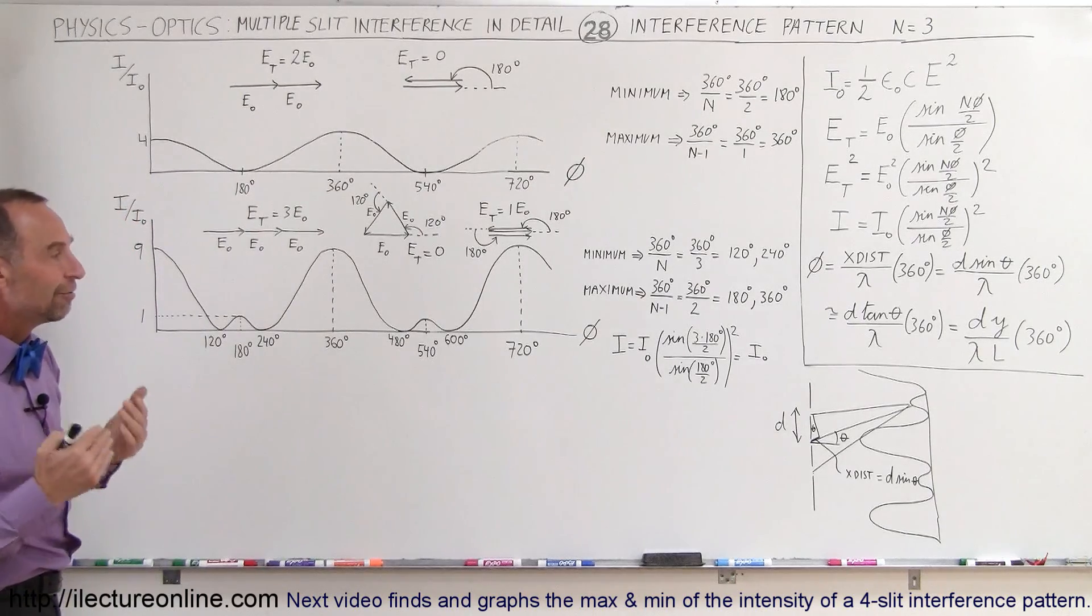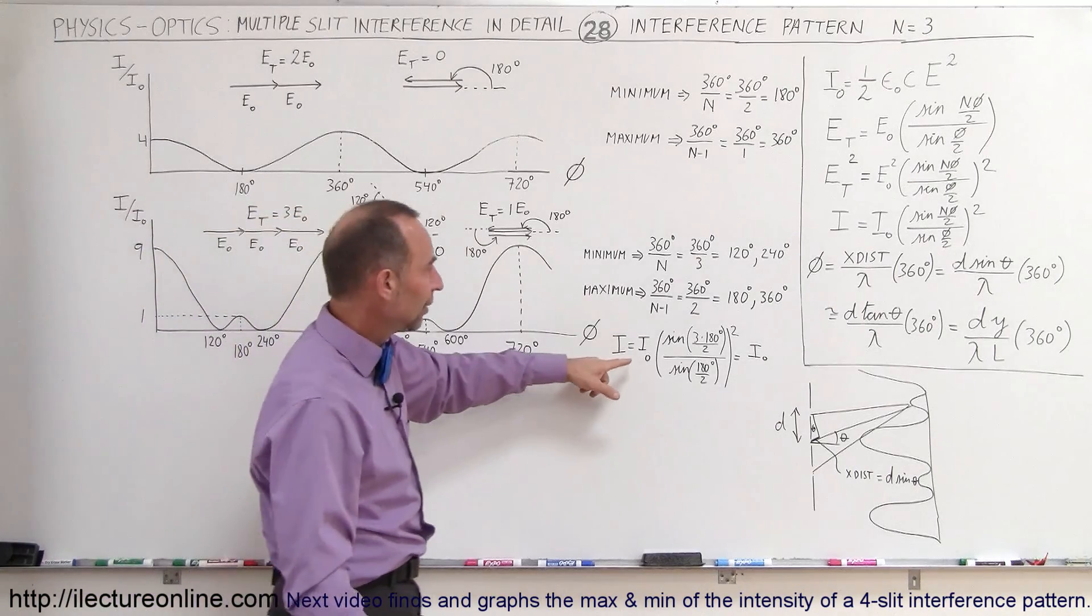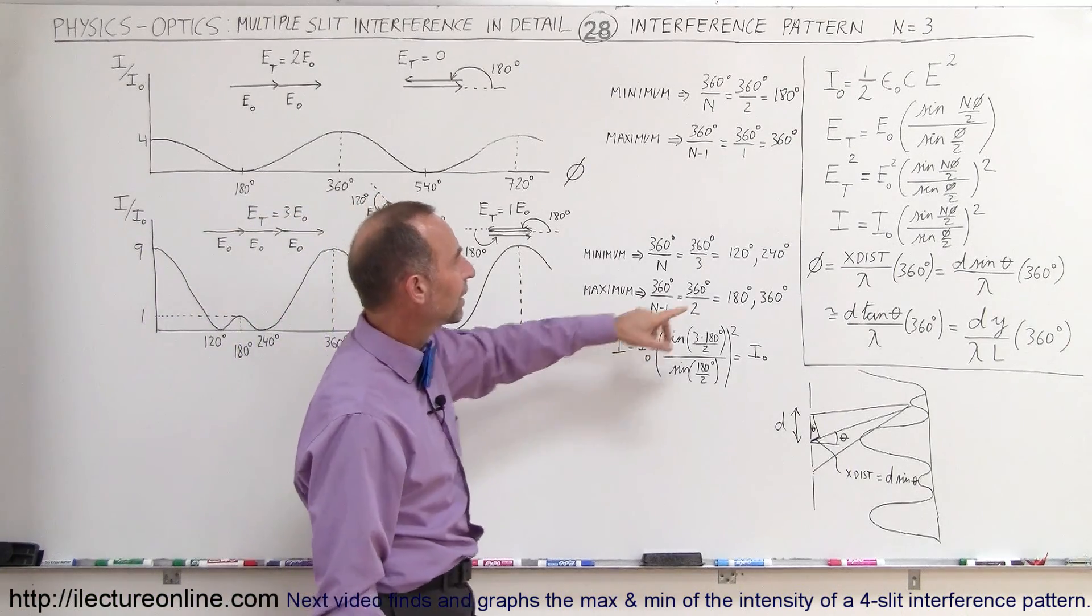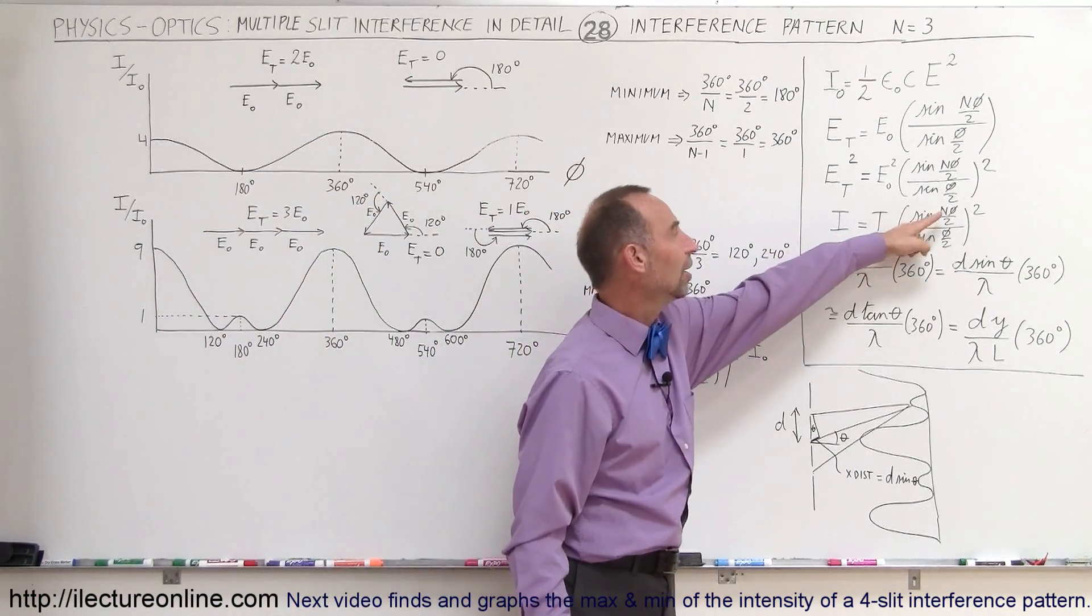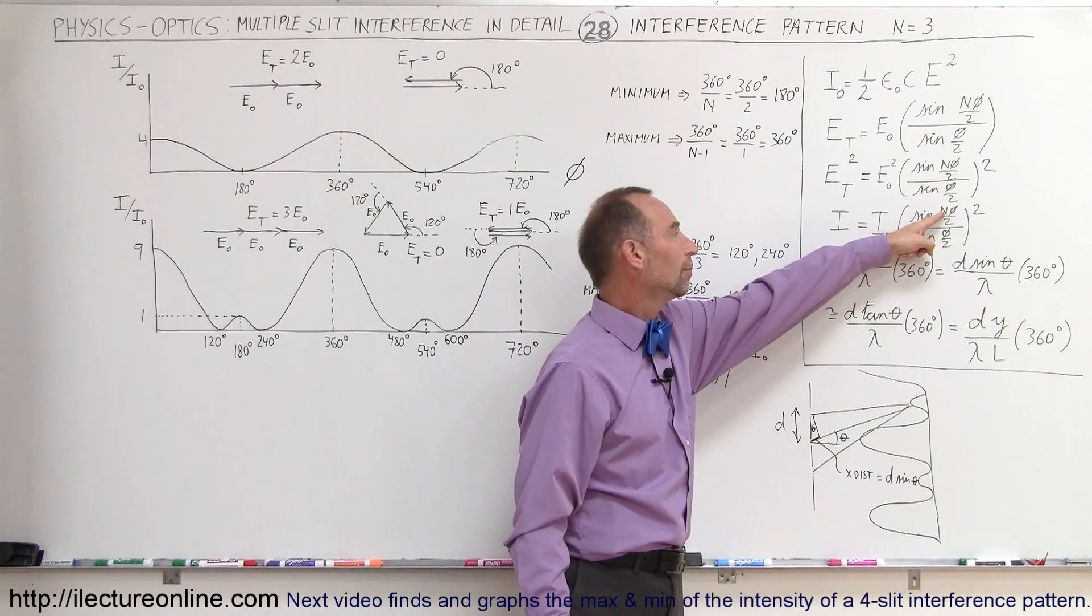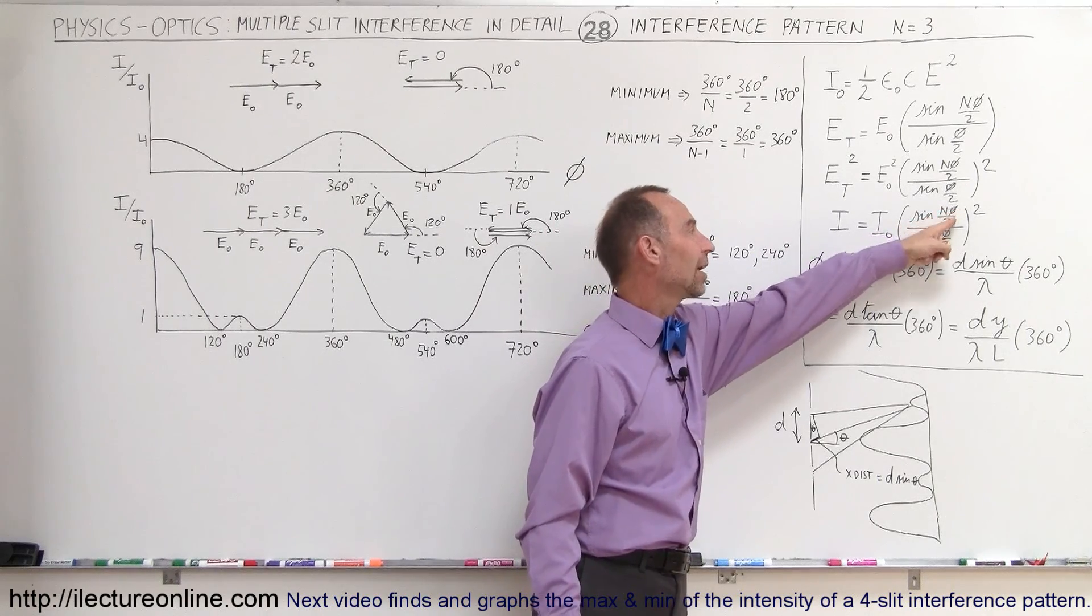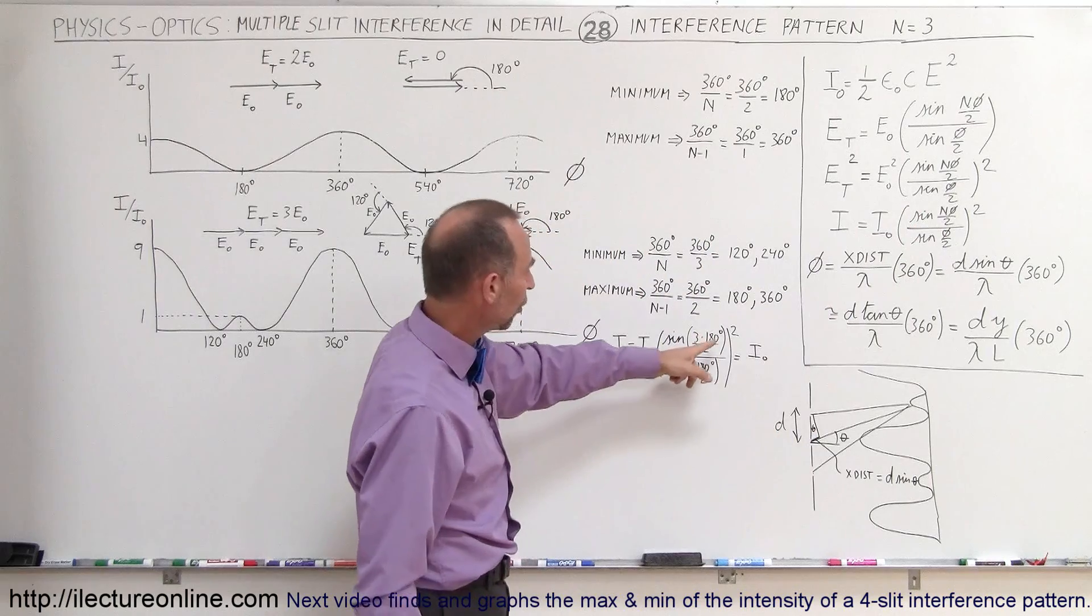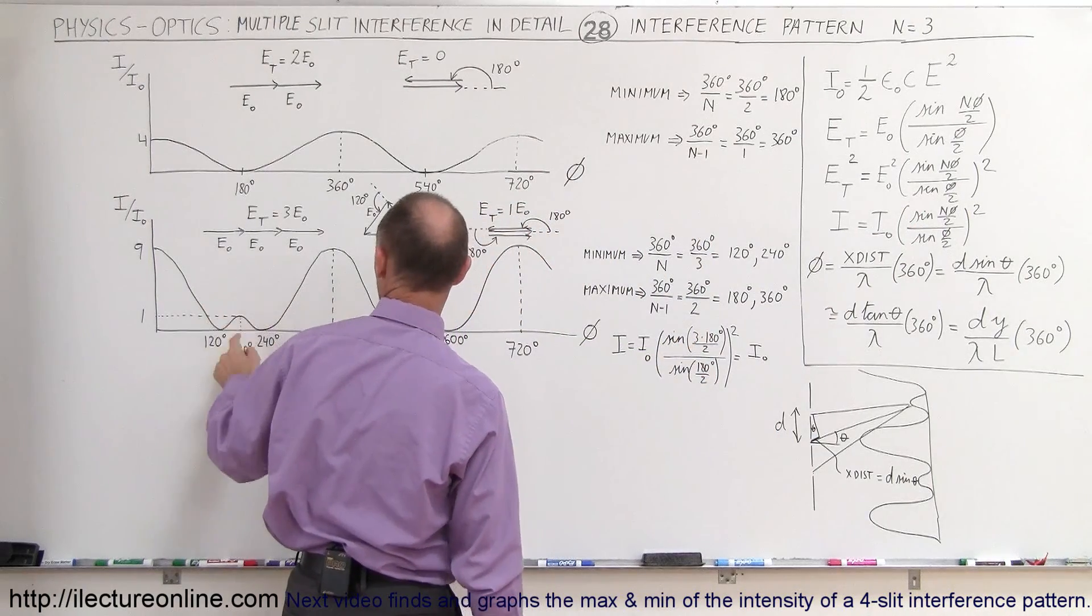Another way we can find the value for that is by going ahead and doing this calculation right here. So we take this calculation. We take the sine of the number of slits times the phase angle divided by two. So 180 degrees, so we take right here,